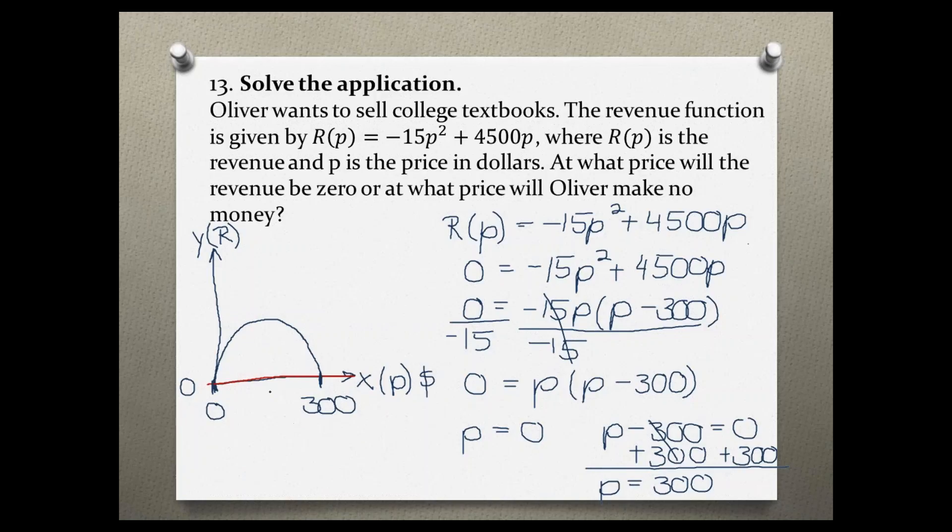So that means that if the price is 0 and we're giving everything away for free, we're not making any revenue. And also, if whatever we are selling, in this case textbooks, if we would charge $300 for that textbook, nobody will probably buy it because they will find it cheaper on Amazon or somewhere else. So when we're charging 300, we're not making any revenue either because we don't have any customers.